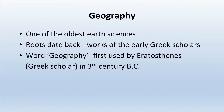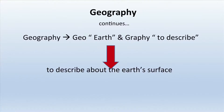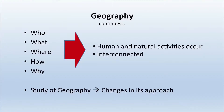Geography is one of the oldest earth sciences and its roots date back to the works of early Greek geographers. The word geography was first used by Eratosthenes, who was a Greek scholar in the third century BC. Geography is composed of two words: 'geo' meaning earth and 'graphi' meaning to describe. So geography in total means to describe the earth's surface.